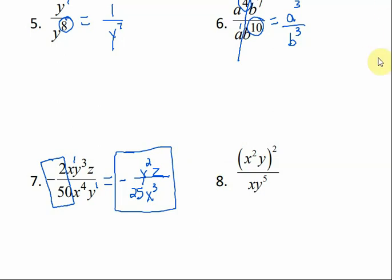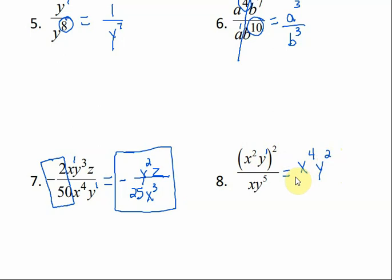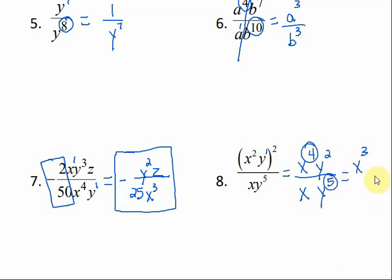Number 8 has another operation going on besides just the quotient rule — we have the power rule. The power rule says when we raise a power to a power, we multiply. So to follow order of operations, we have to do the exponent first before we divide. To apply the power rule, we multiply 2 times 2, giving us x to the 4th. And this is an understood y to the 1, so 1 times 2 is 2. Now that the parentheses are gone, I can divide. I get x to the 3rd on top, and subtracting my y squared and y to the 5th gives y to the 3rd on the bottom.